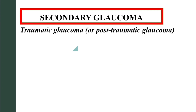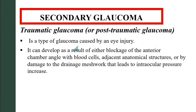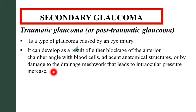The next is traumatic glaucoma, or post-traumatic glaucoma. This is a type of glaucoma caused by eye injury. It can develop as a result of either blockage of the anterior chamber angle with blood cells and adjacent anatomical structures, or by damage to the drainage meshwork, leading to intraocular pressure increase. Thank you so much — if you like this video please give it a thumbs up, and feel free to subscribe.